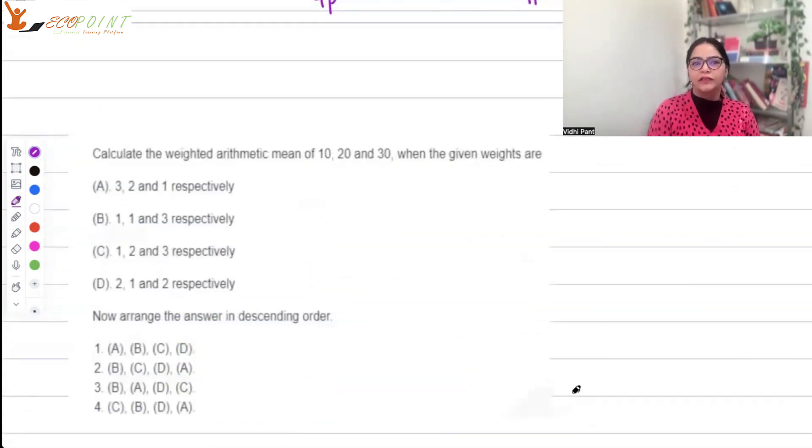In this question we have to find the weighted arithmetic mean of 10, 20, and 30 given different weight combinations, and then put the answers in descending order.